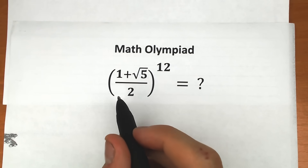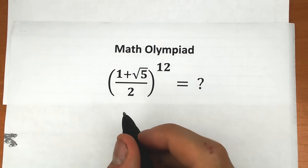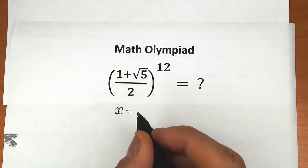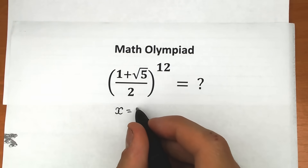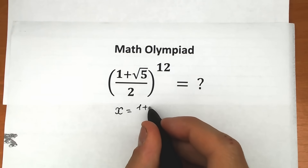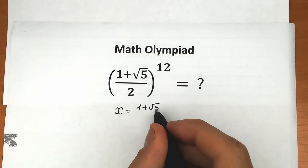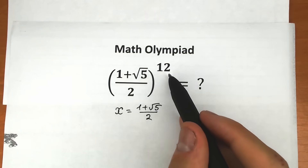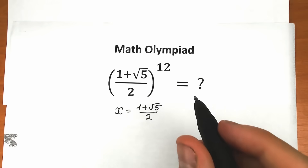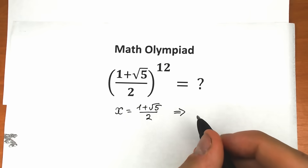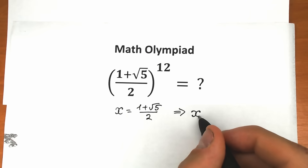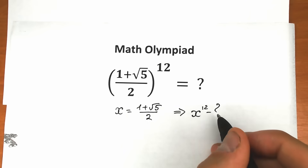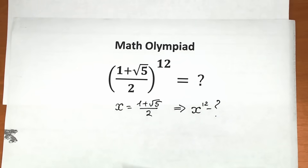First of all, let's call this expression x. So x equals this expression: (1 + √5) / 2. And because we need to raise this to the 12th power, we need to find x to the 12th power.